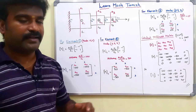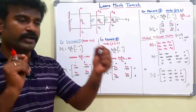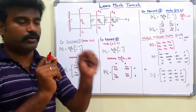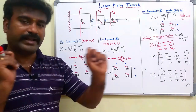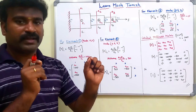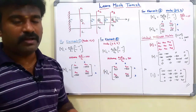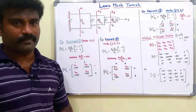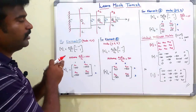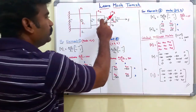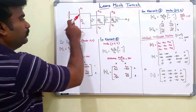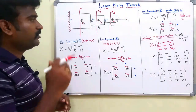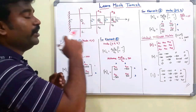For a one-dimensional element, each node moves along the x-axis only, so there is one degree of freedom per node. With two nodes per element, the stiffness matrix is 2×2. For the total bar with four nodes, there are four degrees of freedom — U1, U2, U3, U4. So the global stiffness matrix is 4×4.